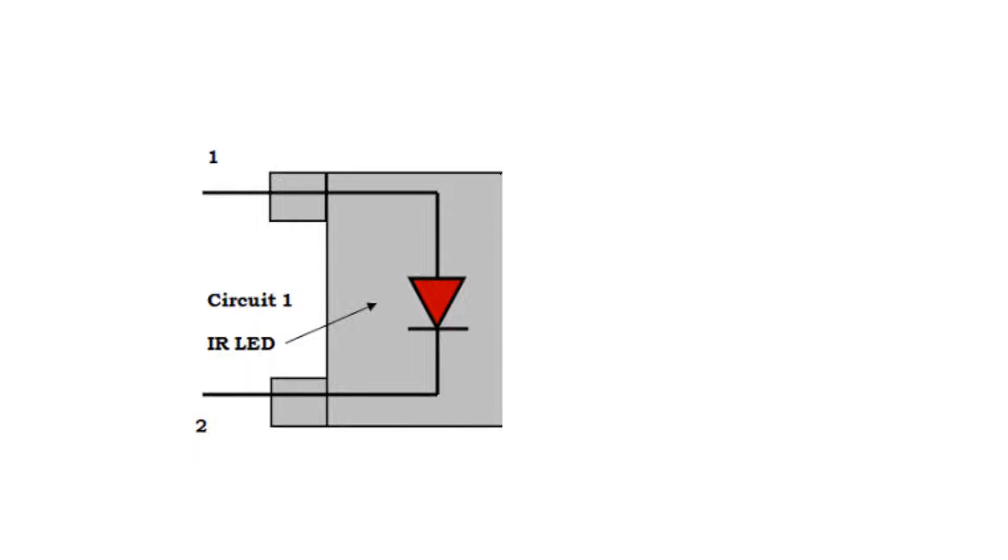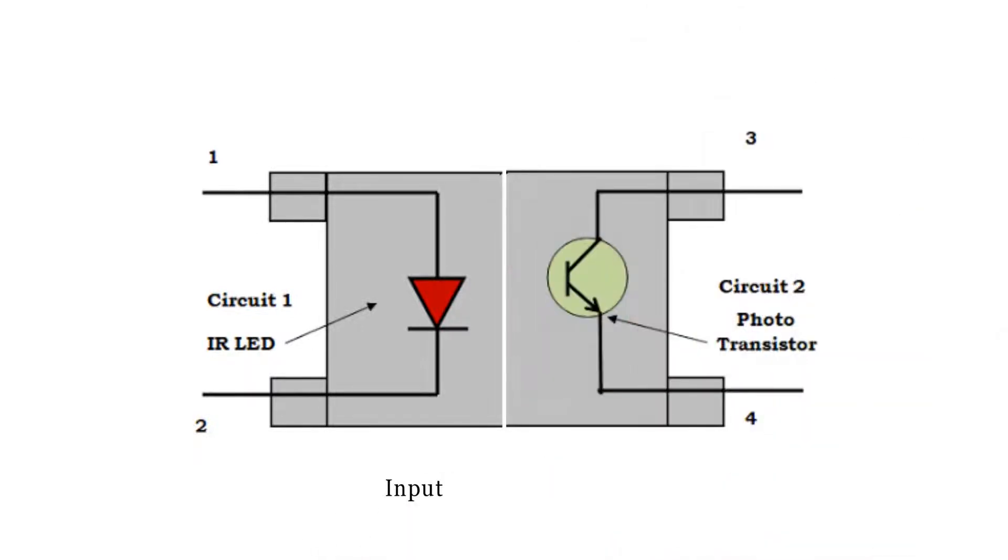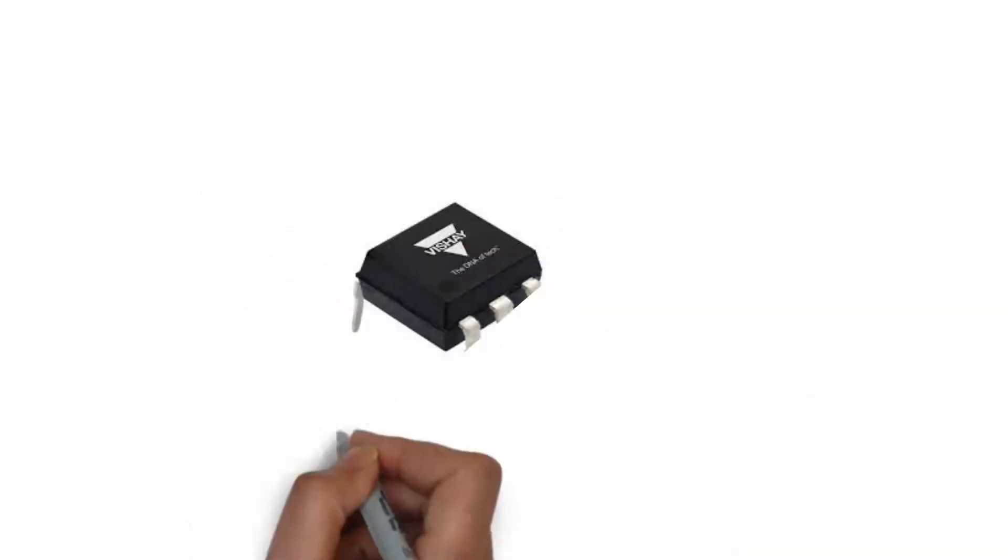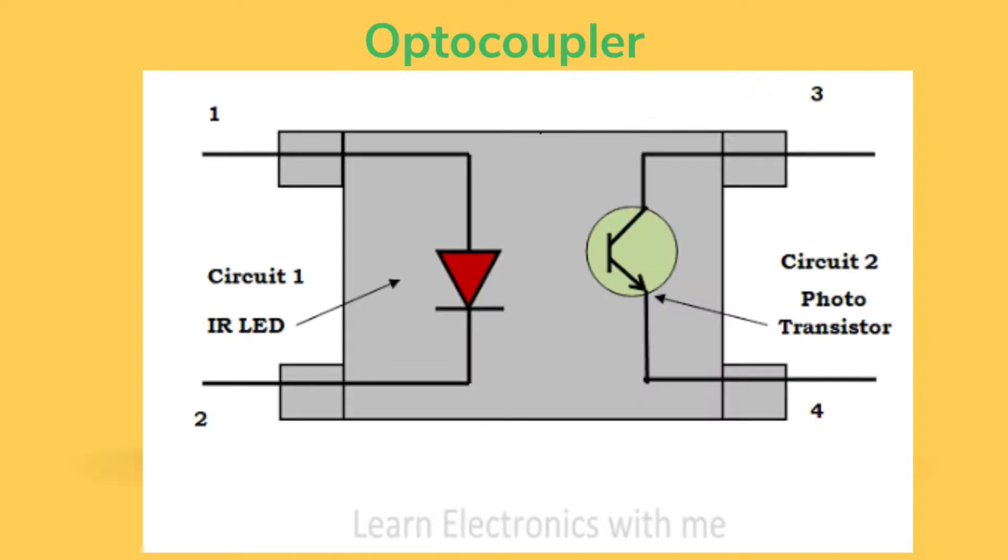Optocouplers typically have two parts: an LED that emits infrared light and a photosensitive device that detects light emitted from the LED. Both parts are contained within a black box with pins for connectivity. On the input side current is first applied to the optocoupler, making the LED emit an infrared light proportional to the current going through IR-LED. When the light hits the photosensor, a current is conducted, and the photosensor is switched accordingly.